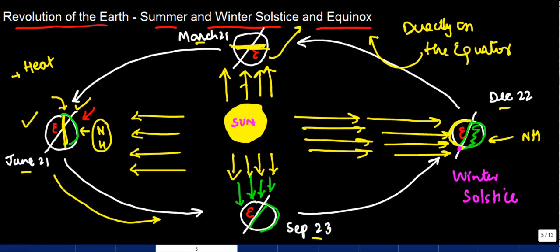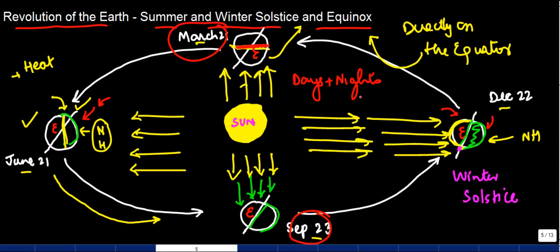During the equinox, on September 23 and March 21, the days and nights are almost equal across the entire Earth. It is not that days are longer in the northern hemisphere and shorter in the southern hemisphere or vice versa — they are almost equal on the entire Earth. I hope you would have understood this. Thank you for being with us today.